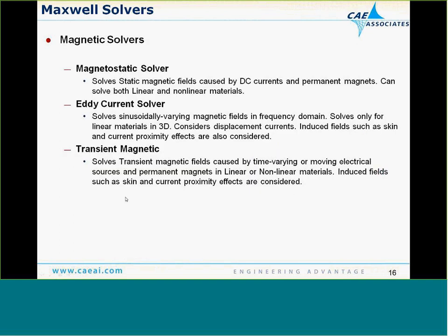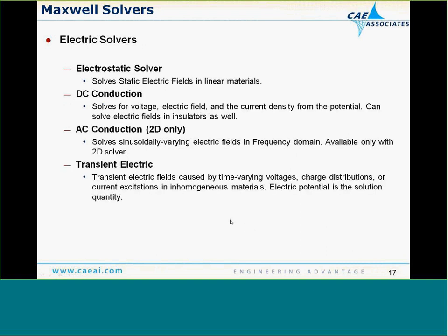The different solvers: magnetostatic solves for magnetic fields caused by DC currents or permanent magnets. The eddy current solver solves for sinusoidally varying magnetic fields in the frequency domain — since it's harmonic, it only allows linear materials, but considers skin effects and current proximity effects. Transient magnetic handles time-varying or moving fields and allows both linear and nonlinear materials. On the electric side, electrostatic covers charges, DC conduction solves voltage and electric field due to potential drop, AC conduction solves sinusoidally varying electric fields in 2D, and transient electric handles time-varying voltages, charges, or current excitations.